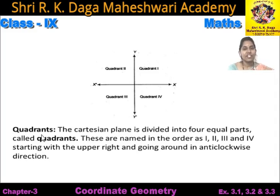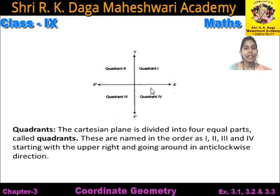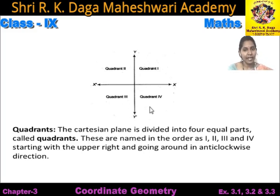Now next definition is quadrant. The Cartesian plane is divided into four equal parts called quadrants. These are named in order as first, second, third and fourth, starting with the upper right and going around in anti-clockwise direction. Jab yeh axes ek dusre ko intersect karte hain, is se Cartesian plane four parts me divide ho jata hai. Yeh four parts quadrant kehate hain: quadrant one, quadrant two, quadrant three, and quadrant four.